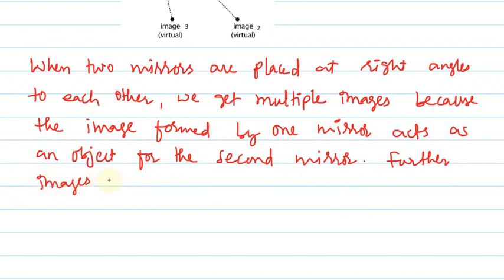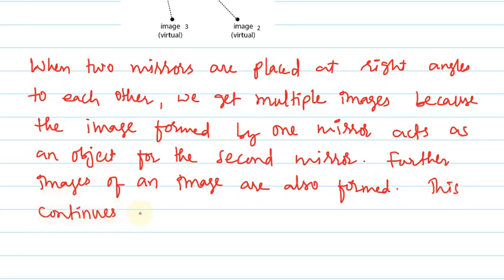Images of an image are also formed. This continues till no more reflection by either mirror is possible.